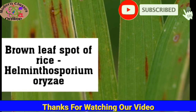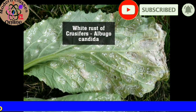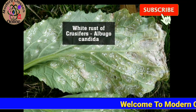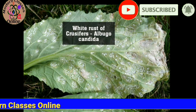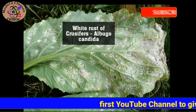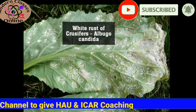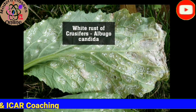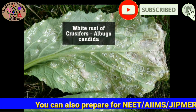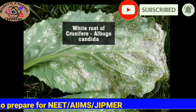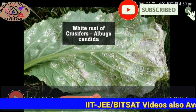If you like this video please do like and do not forget to share it with your friends. This is white rust of crucifers — crucifers are of a crucifer family. This is called Albugo candida. White rust of crucifers — you will see white powder on the plant, which is called white rust of crucifers.